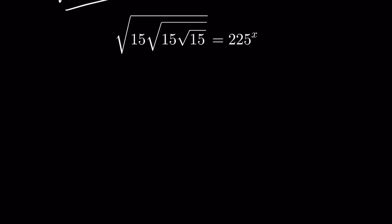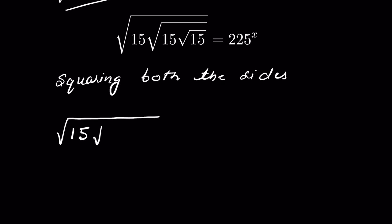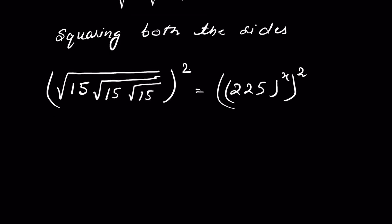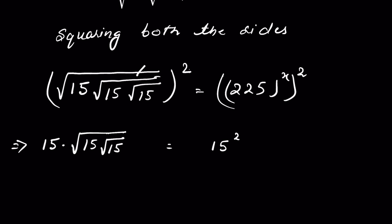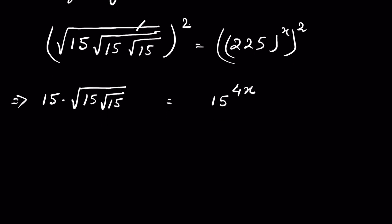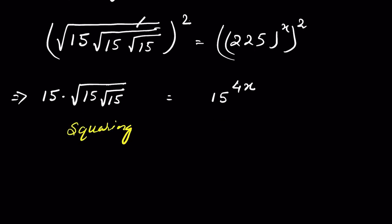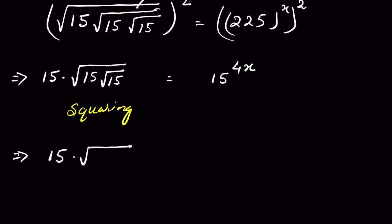Let's try Method 2. First we square both sides: 15 under square root times 15 under square root equals 225 to the power x — we square both sides. This square removes the outer square root, so it is now 15 times 15 under square root, then times 15 under square root under square root, equal to 225 — written as 15 squared — then times x, then times 2, equal to 15 raised to the power of 4x.